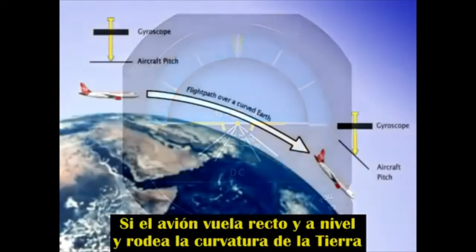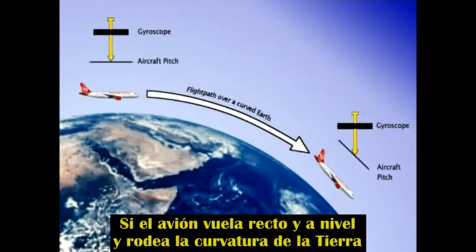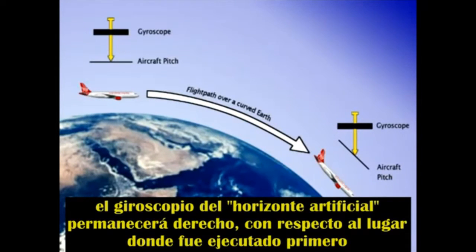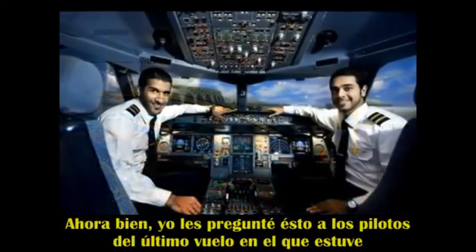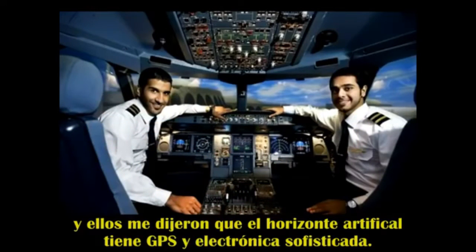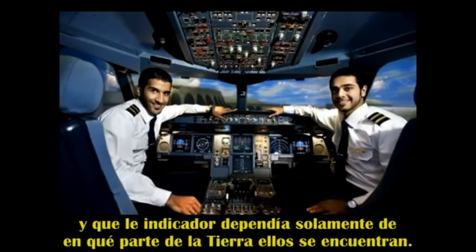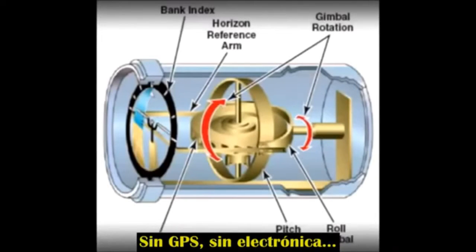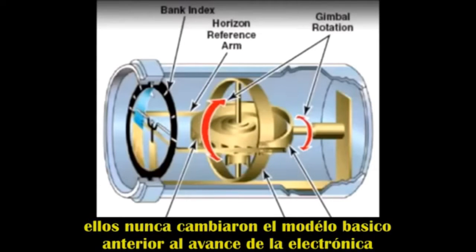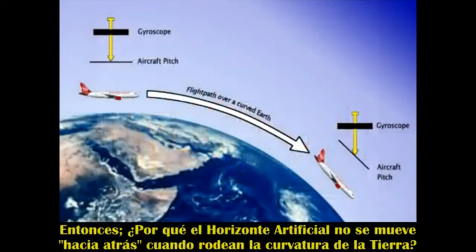As the plane flies straight and level and rounds the curvature of the Earth, the gyroscope in the artificial horizon will remain upright with respect to where it was first spun up to speed, and the indicator will appear to roll backwards and indicate a climb. I asked the pilots of the last flight I was on, and they told me that the artificial horizon has GPS and sophisticated electronics that adjust the indicator depending on where they are on Earth. But when I contacted the manufacturer, I was told that it is a purely mechanical device — no GPS, no electronics — and it hasn't changed in basic design since before the advent of electronics. So why doesn't the artificial horizon roll backwards as they round the curvature of the Earth?